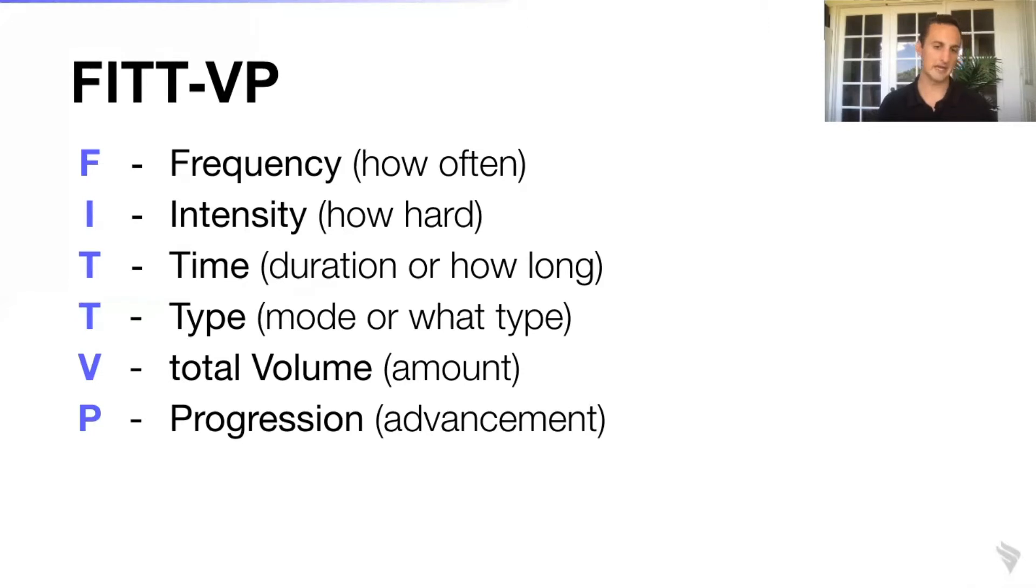Type could be elliptical, bike, treadmill, or it could also be resistance training, plyometric training, and so on. You have total volume, which is the total amount. Total volume can be quantified by a really common way - just total pounds moved in a session, aka sets times reps times the weight. Other ways to quantify total volume might include ground contact times in something like plyometrics.